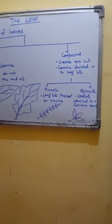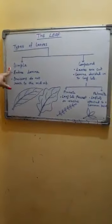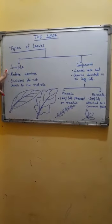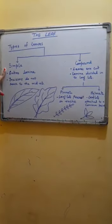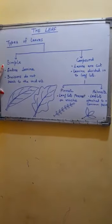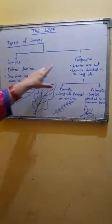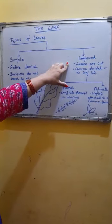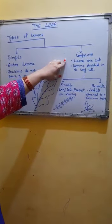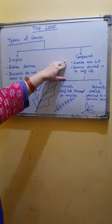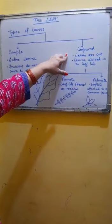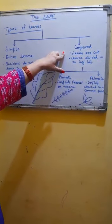In pinnate, leaflets are arranged with a gap on the rachis. But in palmate, the rachis is condensed and all the leaves arise from a common point, giving a palm-like appearance. So it is called palmate compound leaf. To summarize: there are two types of leaves — simple leaves with entire intact lamina (where if incisions are present, they do not reach the mid-rib), and compound leaves, which can be identified by axillary buds present at the leaf axis, not at the leaflets.